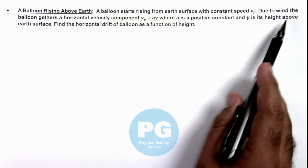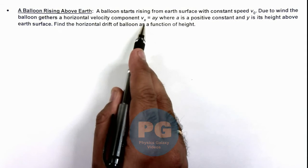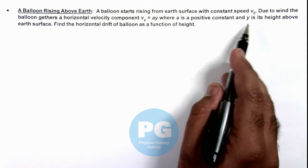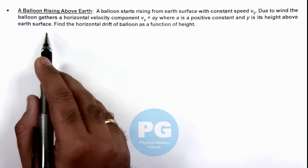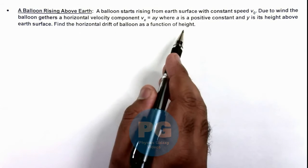Due to wind, the balloon gathers a horizontal velocity component v_x which is ay*y, where ay is a positive constant and y is its height above the earth surface. We are required to find the horizontal drift of balloon as a function of height.